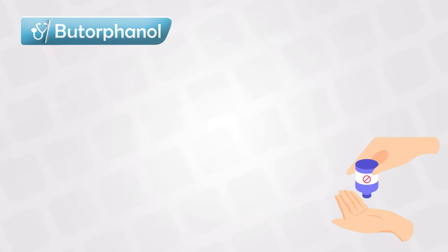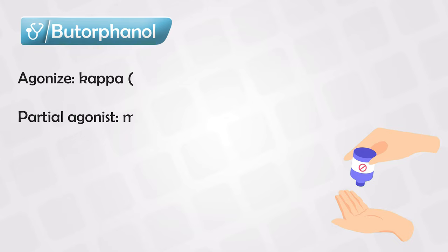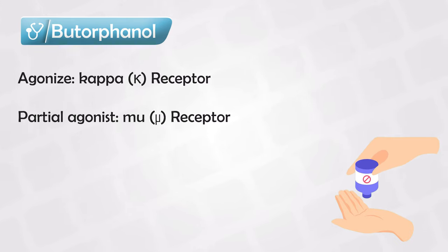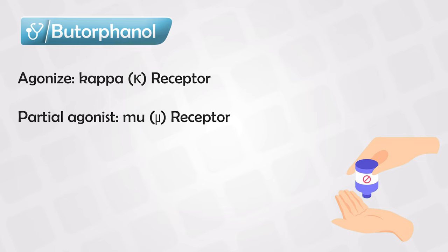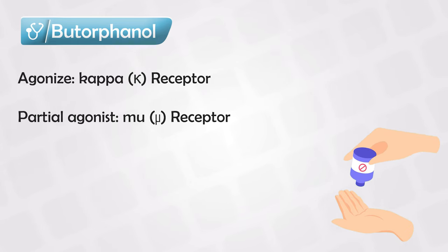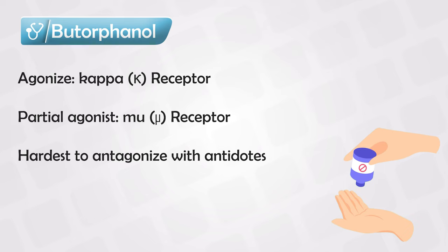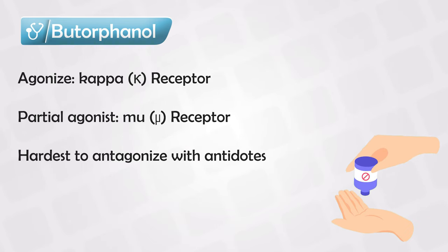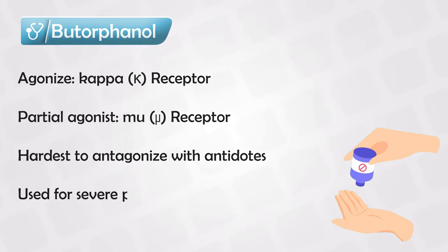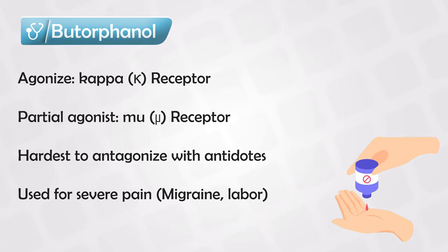Next we have butorphanol. This medication agonizes both Kappa and Mu receptors — Kappa being fully agonized and Mu receptor being partially agonized — and it is one of the hardest medications to antagonize with antidotes. It is mainly used for severe pain, such as migraine or labor pain.